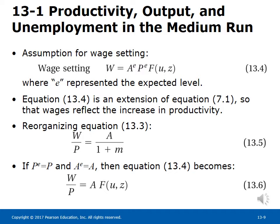The wage-setting assumption given by equation 13.4 is W equals A_E times P_E times a function of U and Z, where A_E represents the expected level of technology and P_E expected prices. Reorganizing equation 13.3, we get equation 13.5: W over P equals A over (1 + M), which says the real wage paid by firms increases one-for-one with productivity. In the medium run, when P_E equals P and A_E equals A, equation 13.4 becomes equation 13.6: W over P equals A times a function of U and Z, meaning the real wage implied by wage bargaining depends on both the level of productivity and the unemployment rate.